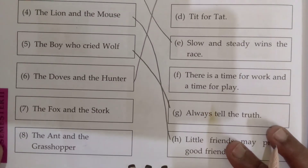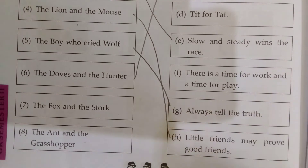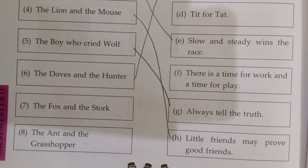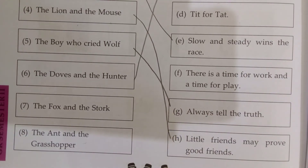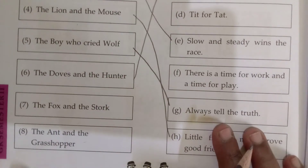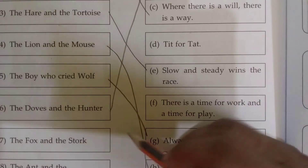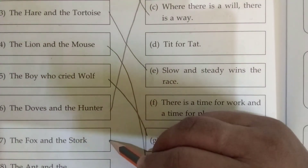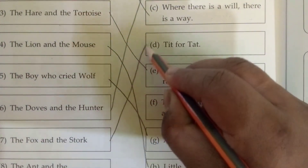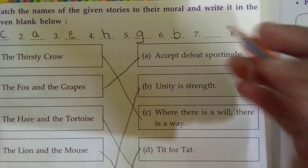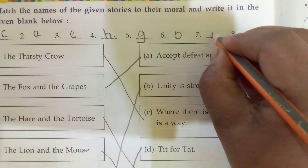Seventh, The Fox and the Stork — the moral is 'Tit for tat.' Here we will write D.